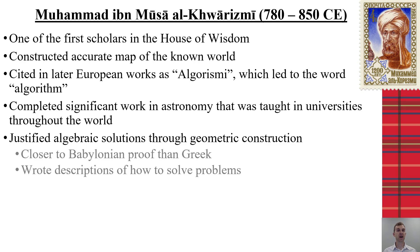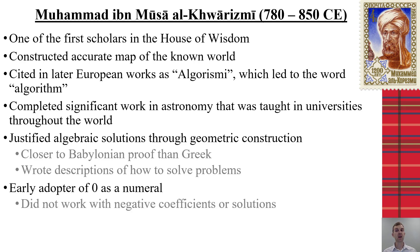Interestingly, al-Khwarizmi's algebraic concepts were worked through geometric construction. While we often consider proving algebraic concepts through geometric construction to be a Greek practice, much of his work actually ties closer to Babylonian civilization than to Greek. Much of what he stated was written out verbally rather than in symbolic algebra, as symbolic algebra would not emerge for several hundred years. Al-Khwarizmi also adopted the numeral zero but did not work with negative coefficients or solutions, which limits some of the algebra from this period.